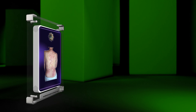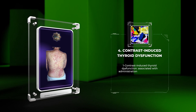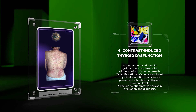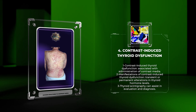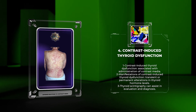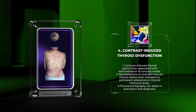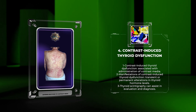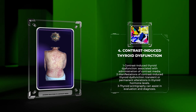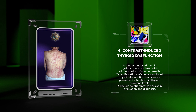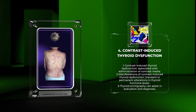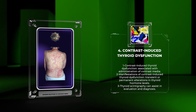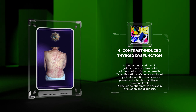The administration of contrast media has been associated with thyroid dysfunction, particularly in patients with pre-existing thyroid disease. Contrast-induced thyroid dysfunction can manifest as transient or permanent alterations in thyroid hormone levels. Imaging studies, such as thyroid scintigraphy, can assist in the evaluation and diagnosis of these changes. Close monitoring of thyroid function and appropriate management are crucial in patients at risk for contrast-induced thyroid dysfunction.